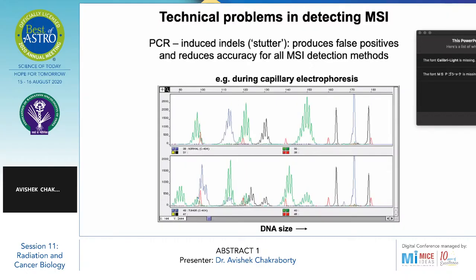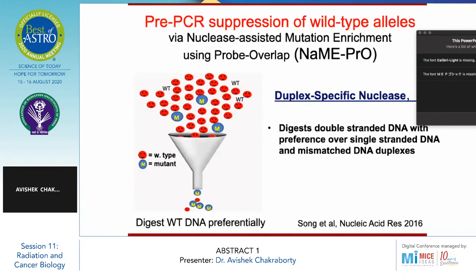This is a graph showing DNA size along with the relative fluorescent unit. Coming to pre-PCR suppression of the wild-type alleles by the NAME probe — nucleus-assisted mutation enrichment using a probe overlap. The duplex-specific nuclease has a special affinity for double-stranded DNA over single-stranded DNA and mismatched DNA duplexes. In this figure, the red dots show wild-type alleles and blue shows mutant-type alleles. This acts as a sieve to digest the wild-type DNA preferentially.